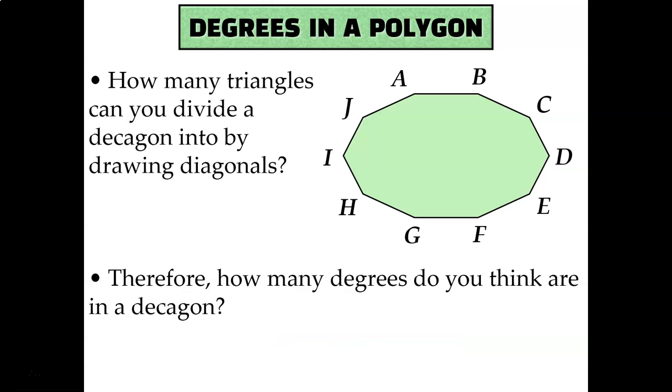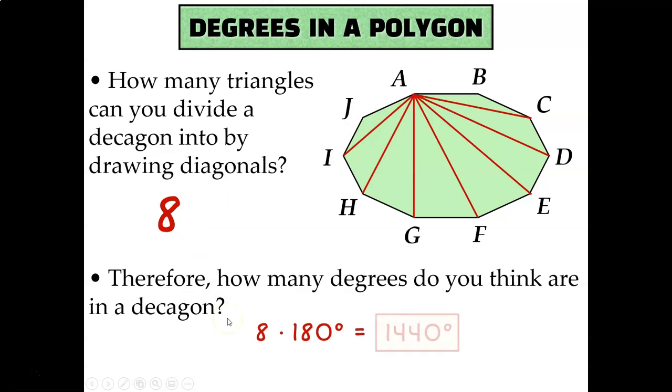Okay, well let's kick it up a notch. Let's go all the way up to a decagon. So from A to I, H, G, F, E, D, and C. Gosh, that's a lot of triangles. 1, 2, 3, 4, 5, 6, 7, 8 different triangles are created when you draw the diagonals from one of the vertices in this decagon. So 8 times 180 gives me my answer of 1440 degrees. That's the total of the angles of a decagon.